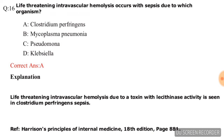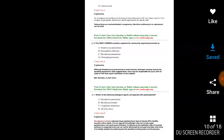Next question: life-threatening intravascular hemolysis occurs with sepsis due to which organism? Options are Clostridium perfringens, mycoplasma pneumonia, Pseudomonas, Klebsiella. The correct answer is Clostridium perfringens, option A.